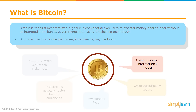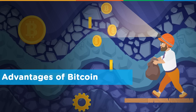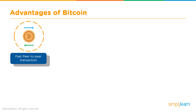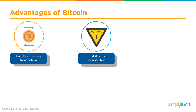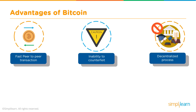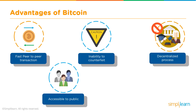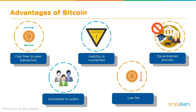Users' information is also hidden and secure. The advantages of Bitcoin include fast peer-to-peer transactions, impossibility to counterfeit or hack transactions on the Bitcoin network, and an overall decentralized process. There is no centralized body controlling transactions or charging fees. It is the participants in the decentralized network who maintain network sanity, keeping overall transaction costs low. All information is accessible publicly on a public ledger, and it is a comparatively low-fee transaction medium.